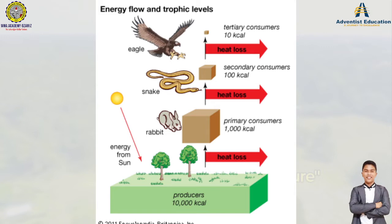The rabbit is then eaten by the snake. So the rabbit is the primary consumer and it is consumed by the snake, making the snake the secondary consumer. The snake also receives only 10 percent of the energy from what it consumed. Since the rabbit contained only 1,000 kilocalories, the snake as the secondary consumer now receives 100 kilocalories. You can see the difference from producers to consumers.